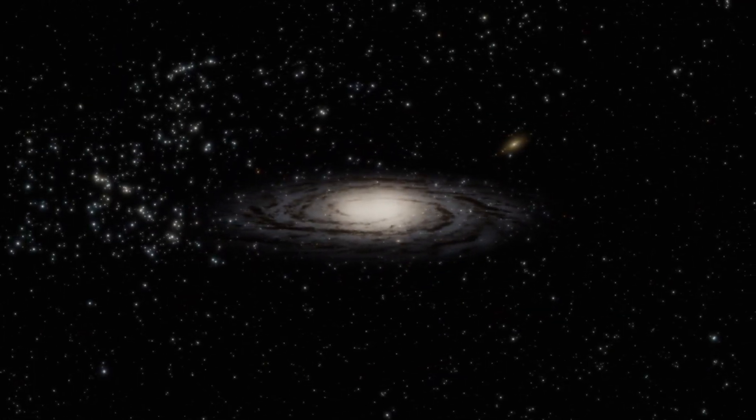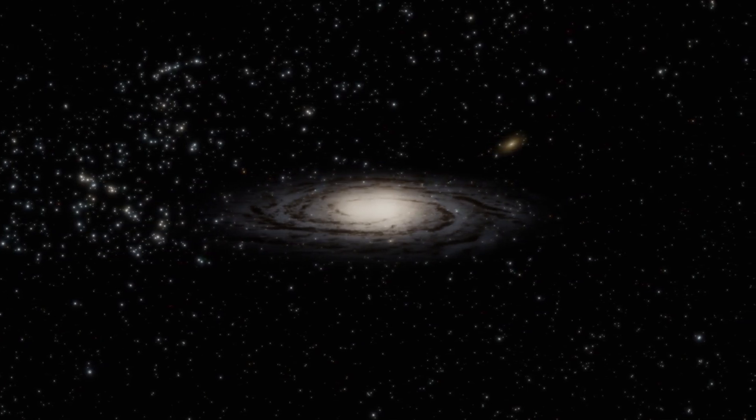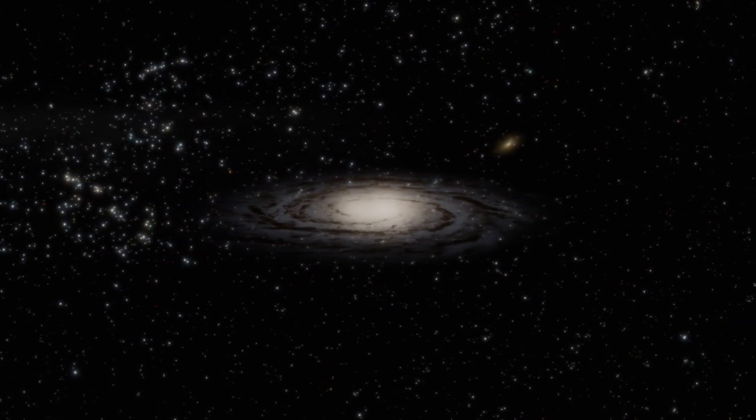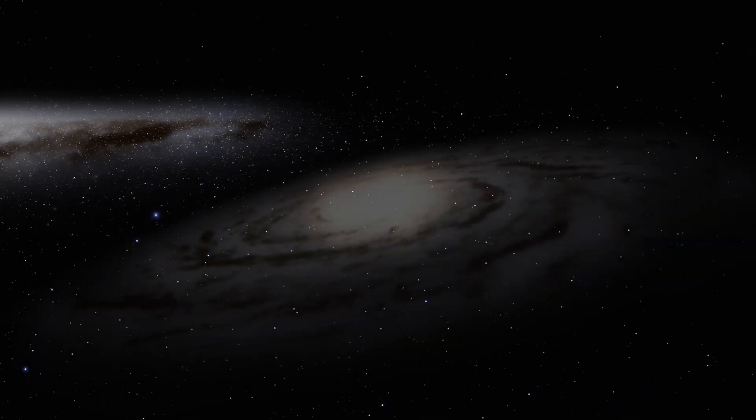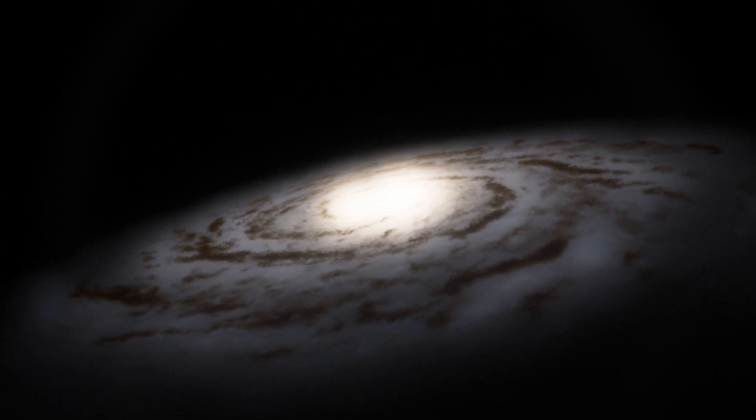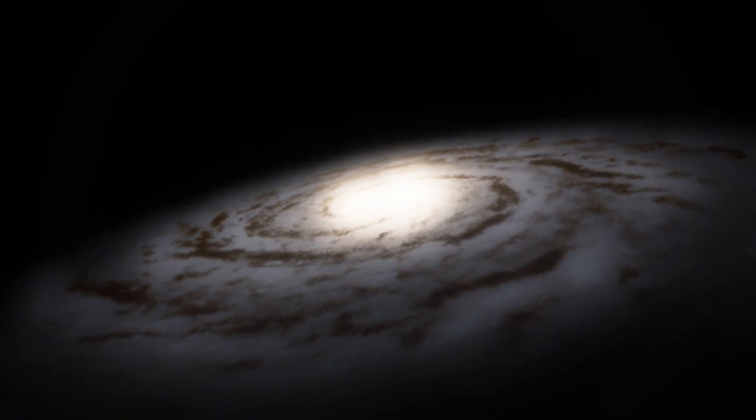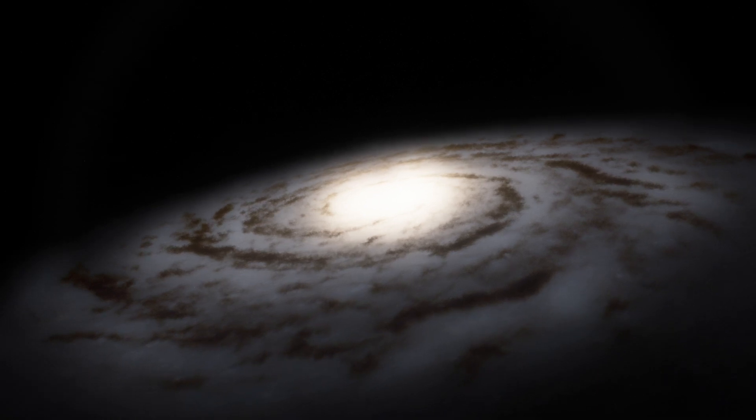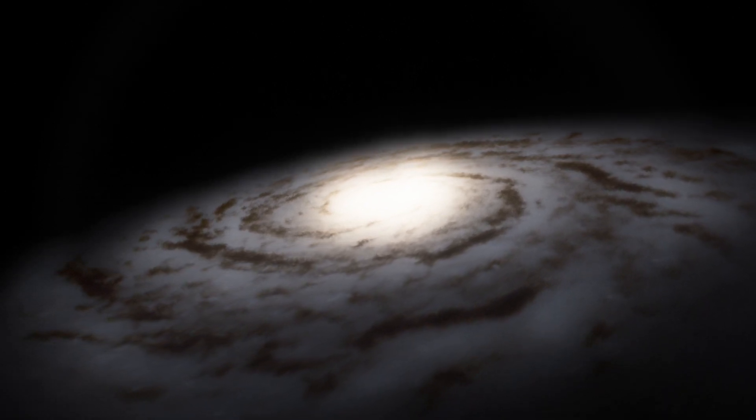Andromeda stands out for its unique characteristics that distinguish it from other galaxies in the universe. With an estimated diameter of around 220,000 light years, it is positioned as one of the largest galaxies in the local group, surpassing even the Milky Way galaxy. This immense scale contributes to its mass, which is estimated at one trillion stars, thus outnumbering our own galaxy.